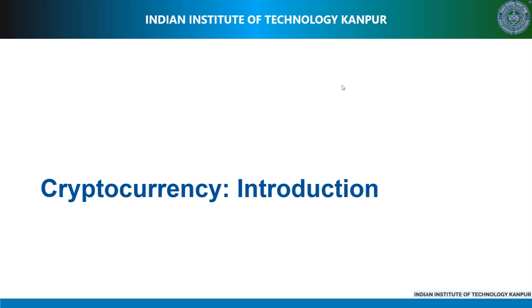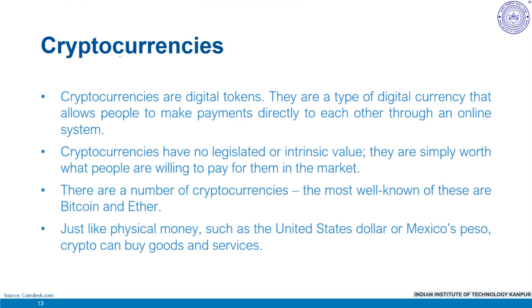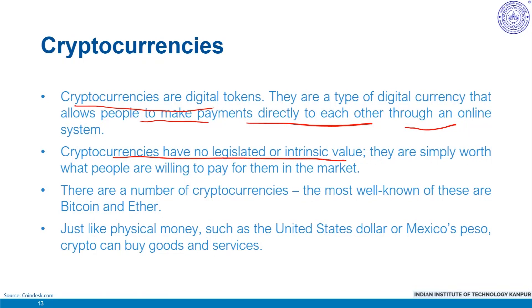In this video, we'll briefly introduce cryptocurrencies and discuss their market dynamics. Cryptocurrencies are digital tokens — a type of digital currency that allows people to make payments directly to each other through an online system. Cryptocurrencies have no legislated or intrinsic value like a fiat currency or any other stock; they are simply worth what people are willing to pay for them in the market.